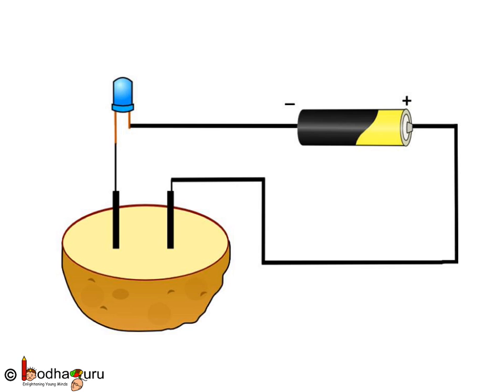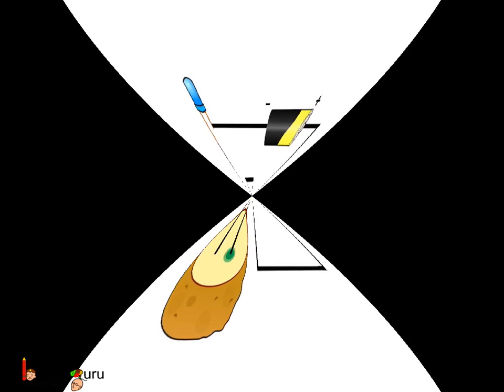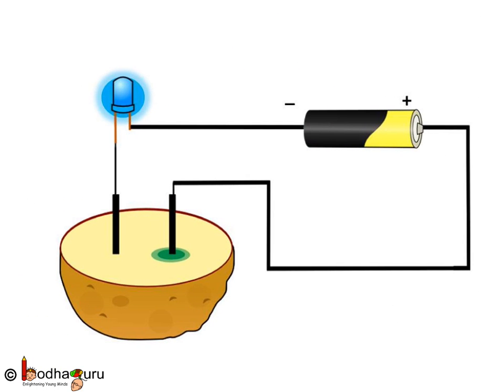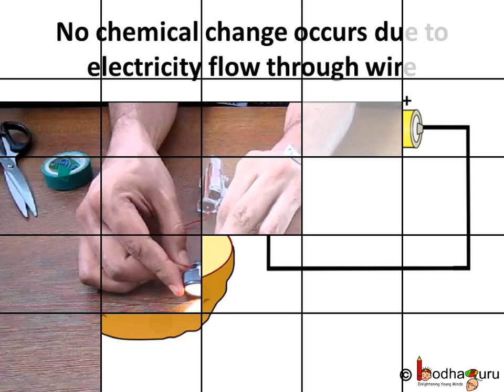What do you see? You will see the LED will glow. Keep it like this for some time. After some time, a greenish blue spot appears in the spot where the positive end of the cell is connected. This chemical change was caused by electricity.